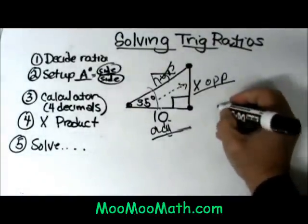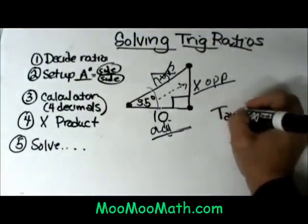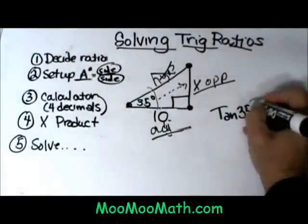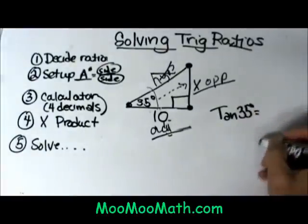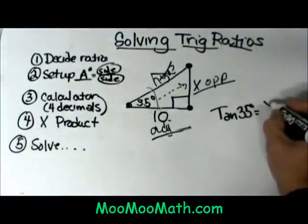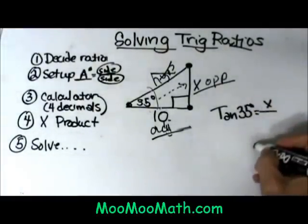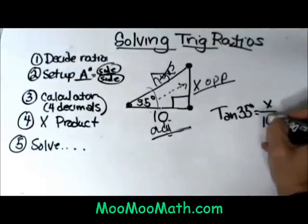So now we're going to take the tangent of 35 degrees and we're going to set it up as a ratio of the opposite, which is our unknown x, over the adjacent side, which is 10.